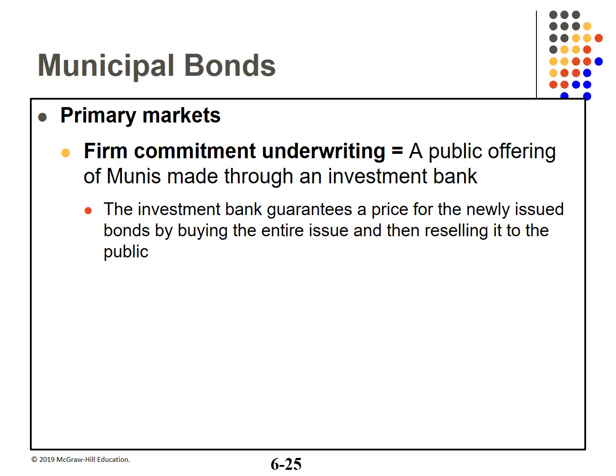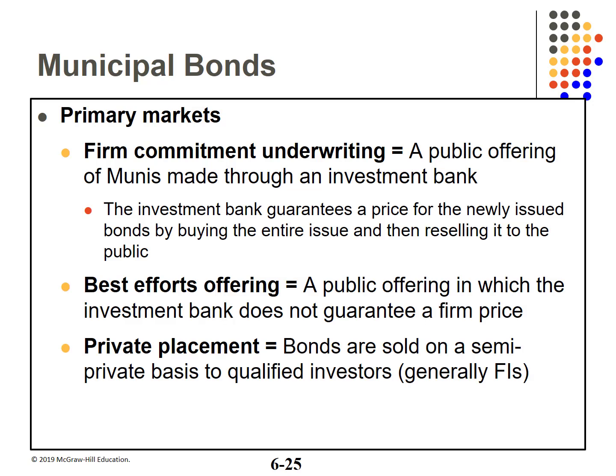Municipal bonds are offered to the public in much the same way as other capital market securities, usually involving an investment bank. A firm commitment offering means the investment bank purchases the entire offering and sells it to the public — all risk is borne by the bank, at a price. A best efforts offering means the investment bank will make their best effort to sell the issue but offers no guarantee — a lower price option. Many bond issues are sold through private placement, where the entire issue is purchased privately by a mutual fund or similar financial intermediary.